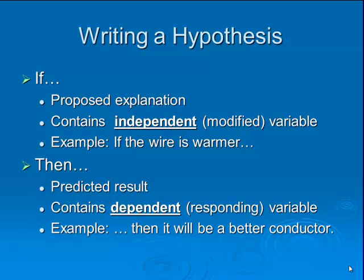The 'then' statement is your predicted result, and that predicted result normally contains the dependent variable, sometimes also called the responding variable. So when you change the temperature of the wire, what happens? For example: 'then it will be a better conductor.' So: if the wire is warmer, then it will be a better conductor. That's an if-then hypothesis.